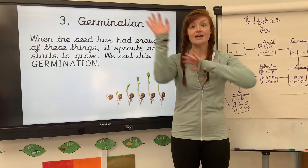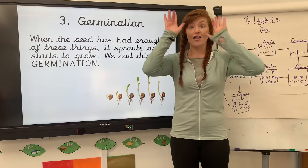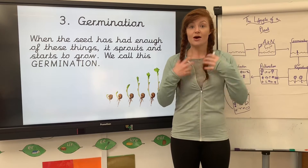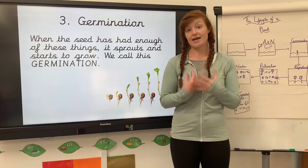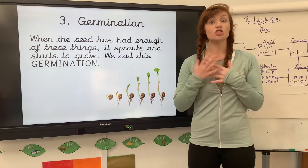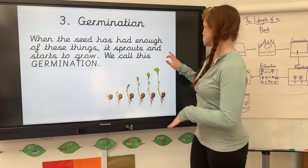It needs the sunshine, the air, the water and the nutrients, and when it's got enough of that, it begins to sprout and grow — and that's called germination.